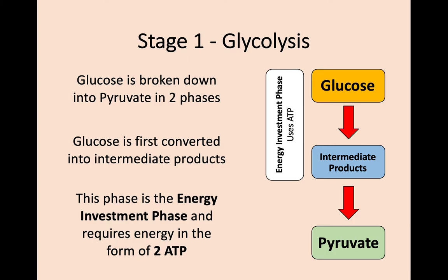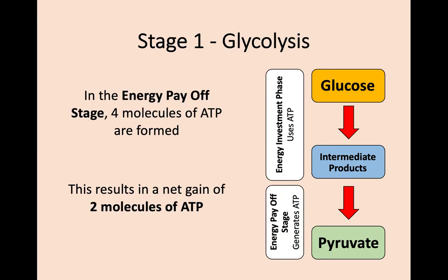Now let's go into more detail around glycolysis in terms of ATP produced. The purpose of respiration is to produce ATP. In the first part of glycolysis, where glucose is broken down into intermediate products, two molecules of ATP are actually used up. Because two ATP have been used to phosphorylate the intermediates, we call this the energy investment phase. In the next stage, the energy payoff phase, four molecules of ATP are formed. However, because two were used in energy investment, there is a net gain of just two molecules of ATP from the entire process of glycolysis.